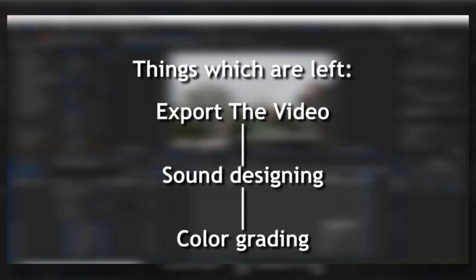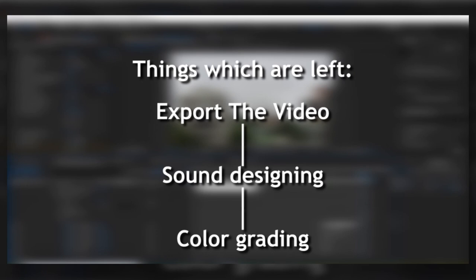That is pretty much how you can do the falling drop effect inside After Effects. All you need to do now is export this composition, put it into Premiere Pro, and do some sound designing like the drop sound and some music.